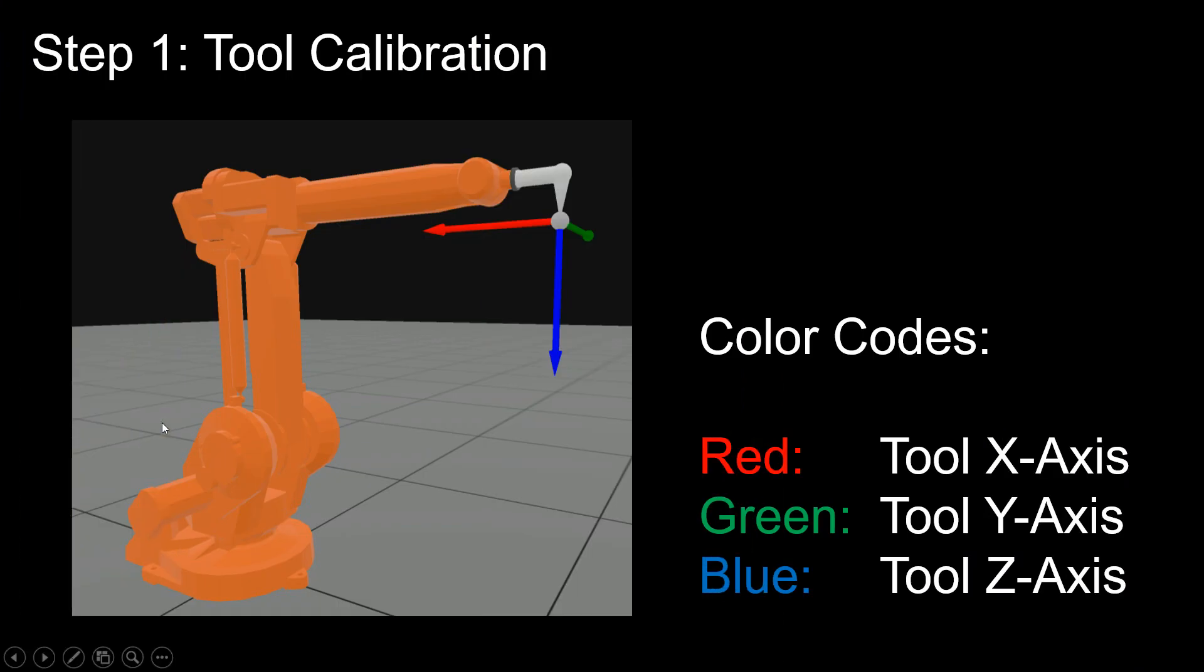The first step in the process is to calibrate the tool. In this picture, we see a coordinate frame where the red axis is the tool X-axis, the green axis is the tool Y-axis, and the blue is the tool Z-axis.